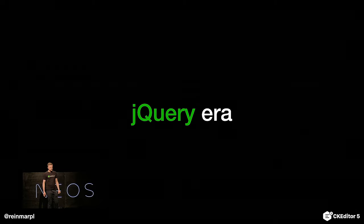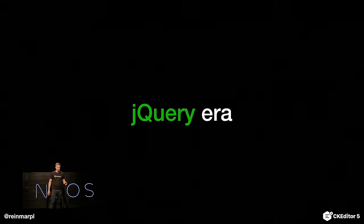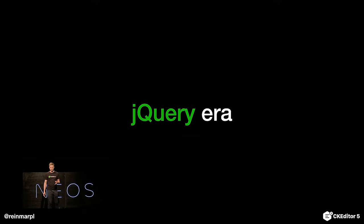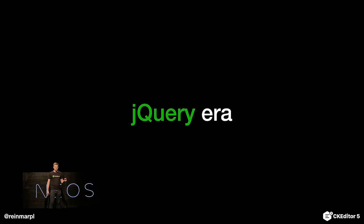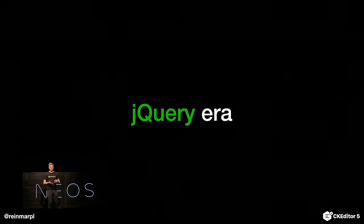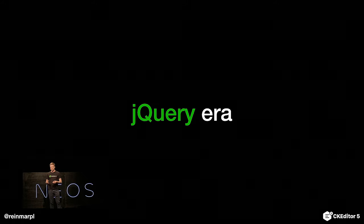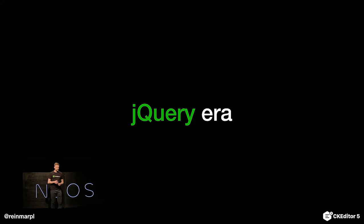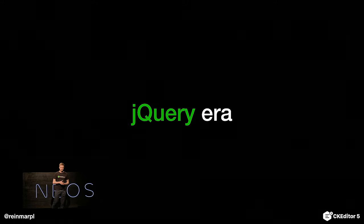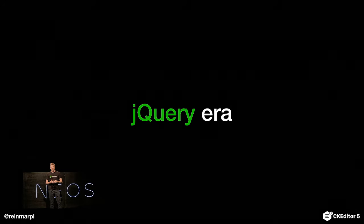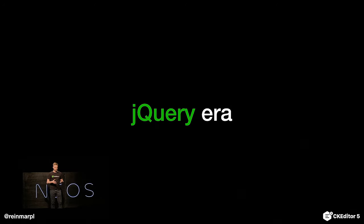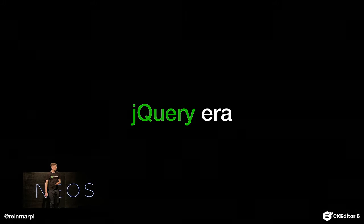And this architecture isn't specific to rich text editors — it's how the web looked like 10 years ago. We were focusing on dealing with bugs and inconsistencies rather than architecting our applications. And of course jQuery, Mootools, or Prototype were brilliant pieces of engineering, but it was actually sad that we had to deal with those bugs and create two-column layouts instead of architecting our applications.